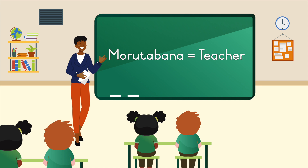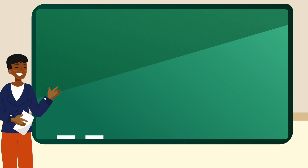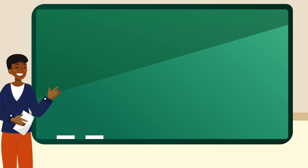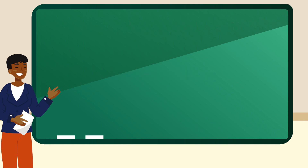Do you know the language we are learning? Ee or nya. The language we are learning is Sichuan. Say it with me: Sichuan. When we speak about the language we say Sichuan. Say it with me: Sichuan. So you would refer to the language as Sichuan.